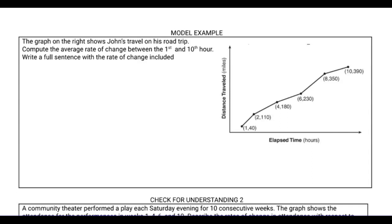The graph on the right shows John's travel on his road trip. We're supposed to compute the average rate of change between the first hour and the 10th hour. And we're supposed to also write a full sentence with the rate of change included, similar to what we just did for the previous problem. Okay, so close the video, try this one out, and then come back to see if you got it right. So we're supposed to compute the average rate of change, which is the slope between the first and 10th hour. Here's the first hour, and here's the 10th hour. It looks like the time is in hours and the distance is in miles this time.